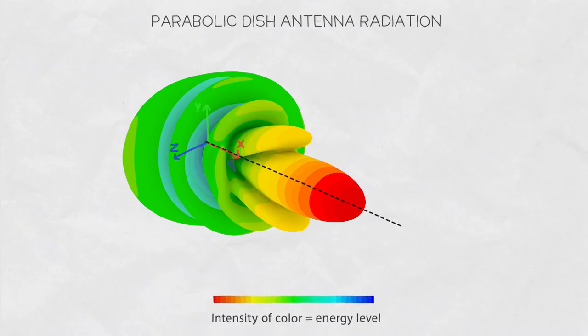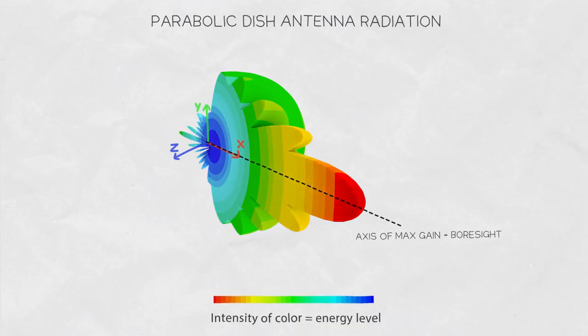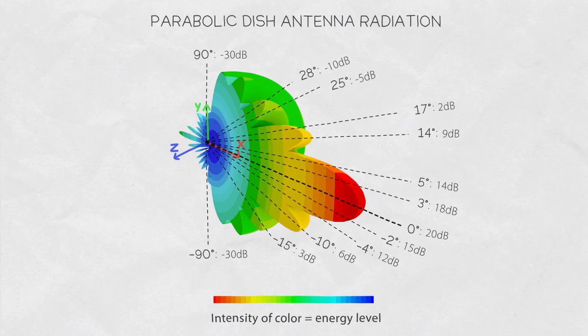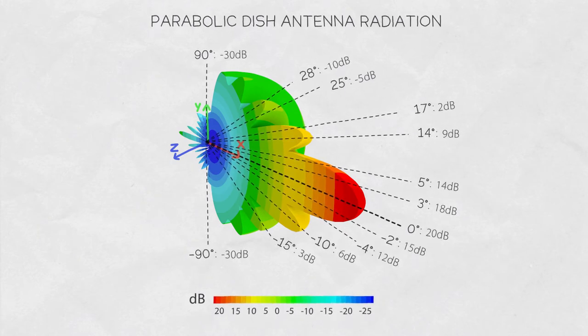With directional antennas we call the axis of maximum gain the bore site. For directional antennas the bore site is the axis of symmetry for the antenna. Now let's label angular direction with zero degrees at the bore site and then measure antenna gain at every angle. Then we mark the intensity of energy at every point.